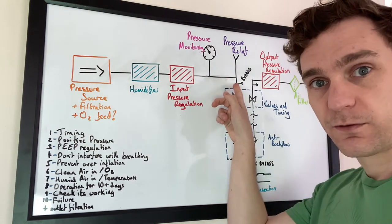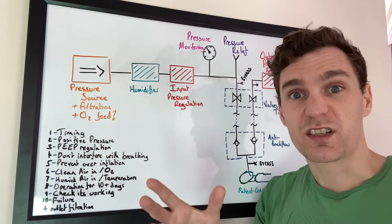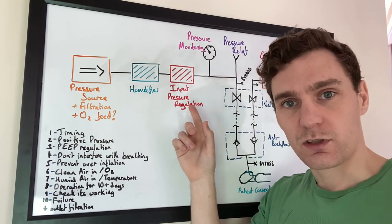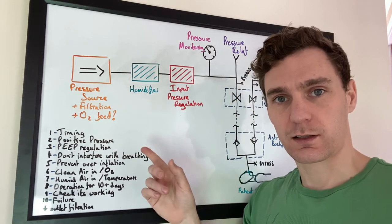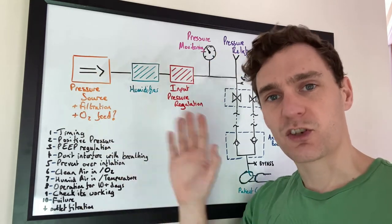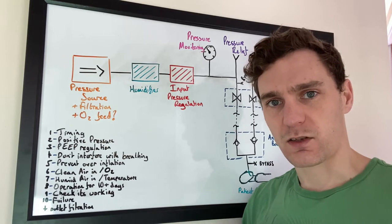Next thing is pressure relief. This could be a burst disc. This could be a water bottle. This is to make sure that you don't over pressure the patient's lungs. If something goes wrong with any of this system upstream, you don't end up applying too much pressure and damaging the patient's lungs.